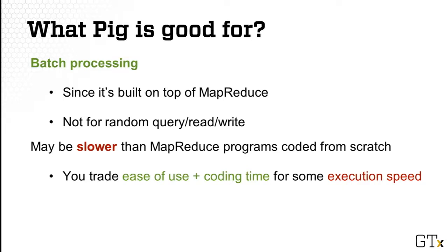Since a PIG program is eventually converted into a MapReduce program, it will have the same limits as Hadoop MapReduce, meaning it is still disk-based. So PIG is still mainly suitable for batch processing, and not for real-time random read or write of data. A PIG program could be slower than a MapReduce program that you write from scratch, because PIG may need to figure out quite a few details, such as what Map and Reduce functions it should convert your PIG script into.